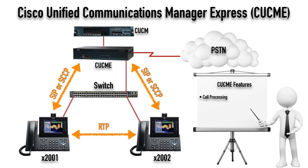Our Cisco Unified Communications Manager Express can get out to the rest of the world - we don't have to talk just between IP phones. We can go over a TDM - time division multiplexed circuit - to get out to the PSTN, the public switched telephone network. This could be an ISDN connection based on a T1 or E1 circuit. I've got a really thorough YouTube video on T1s and E1s - about 40 minutes - if you want to learn more about time division multiplexing.